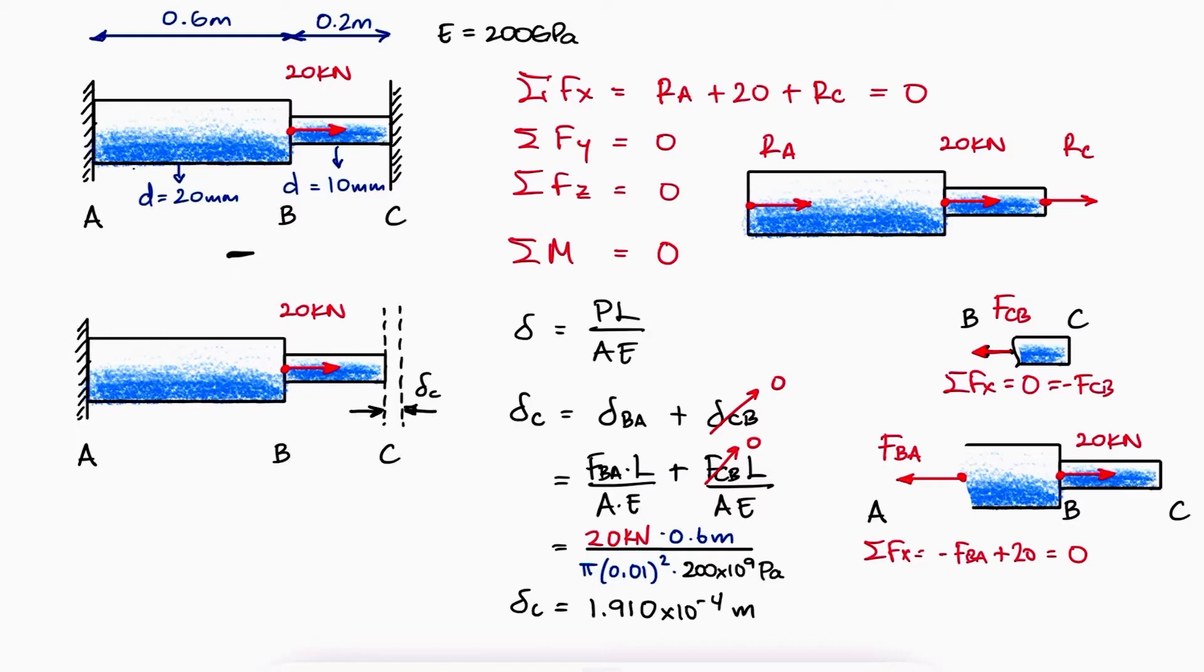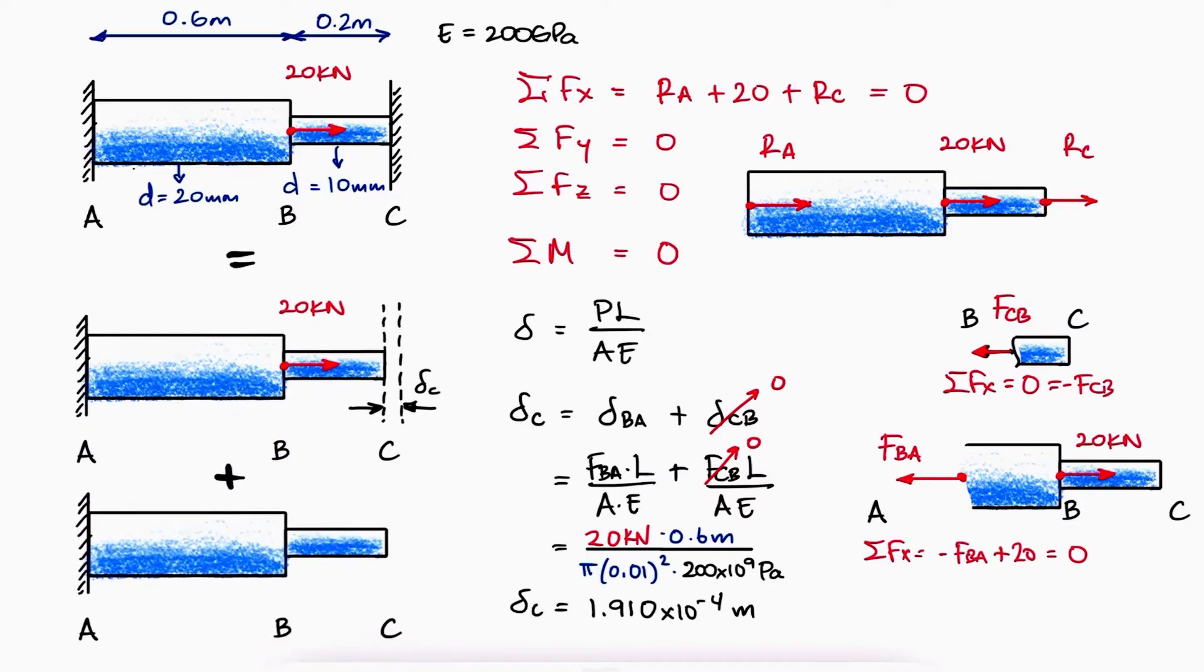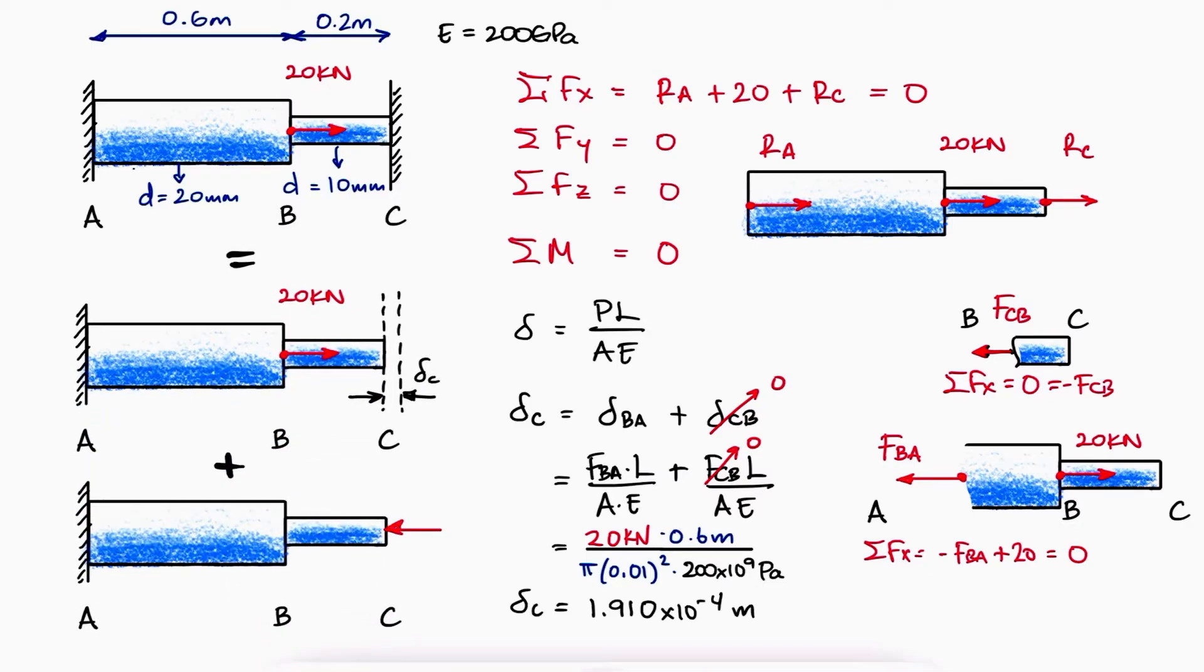Then, we would superpose a second scenario where the wall is now there at C causing a reaction. And because we already took care of the external load, this new superposed scenario doesn't have it in it.